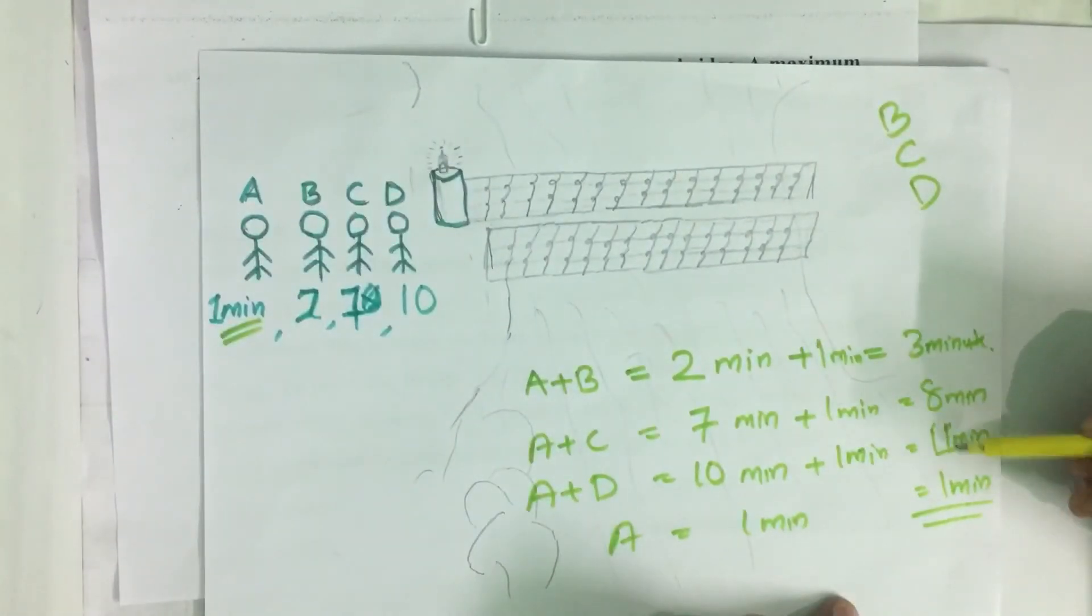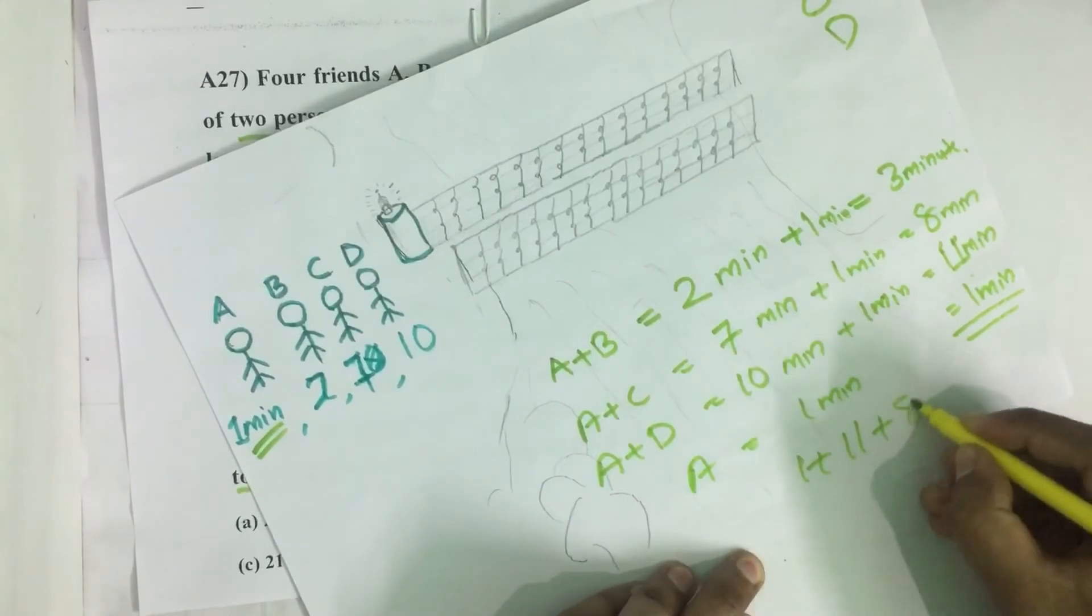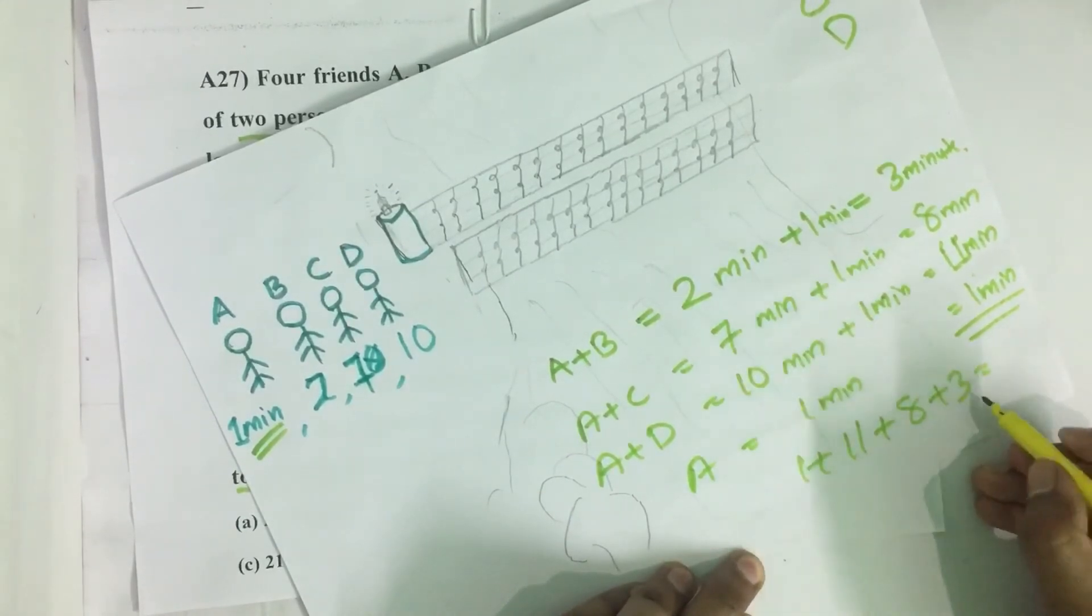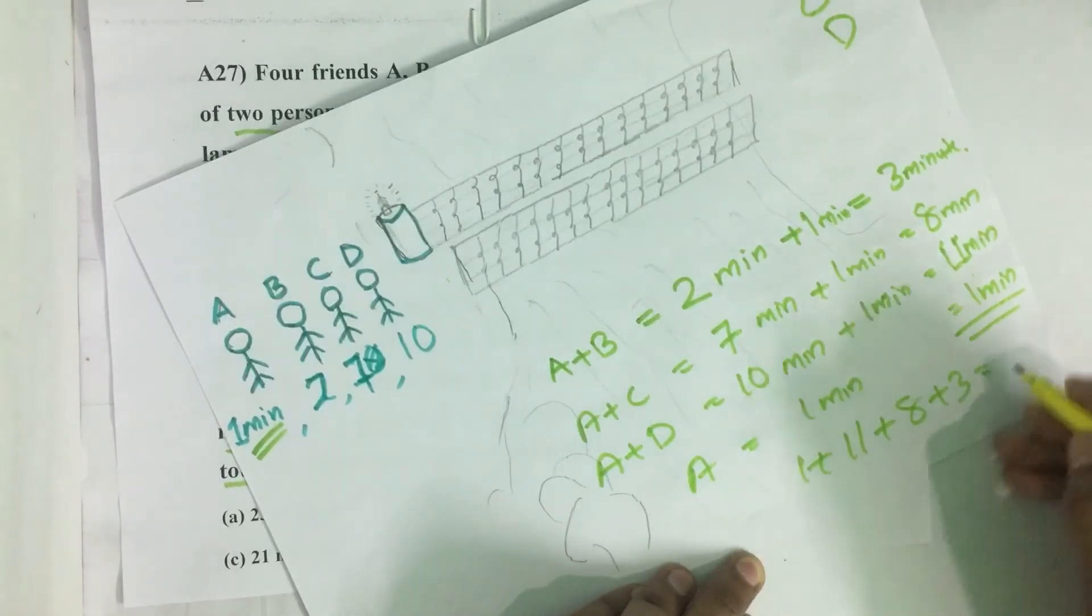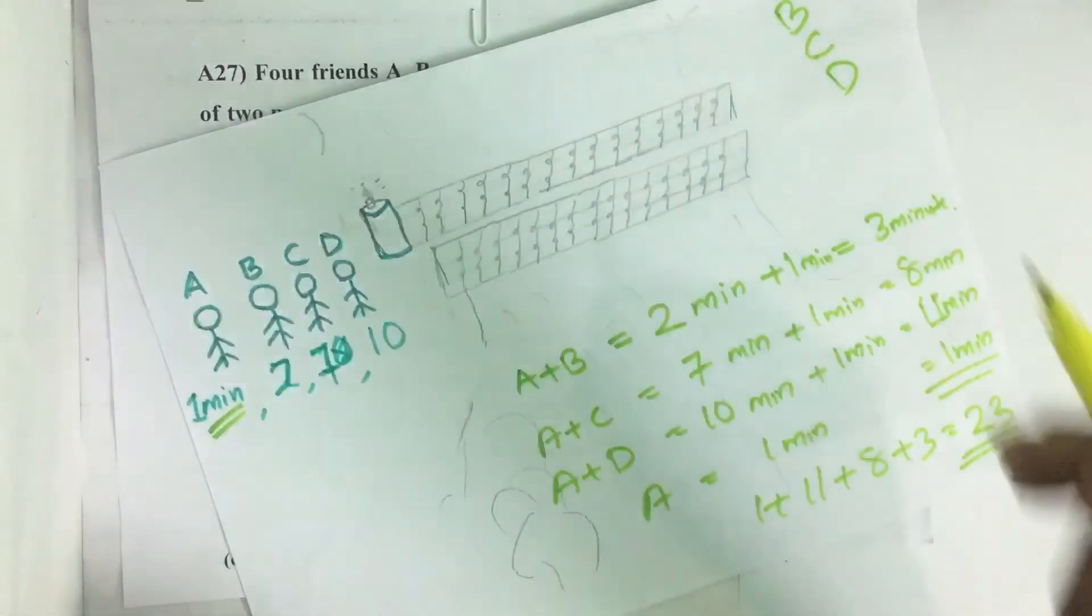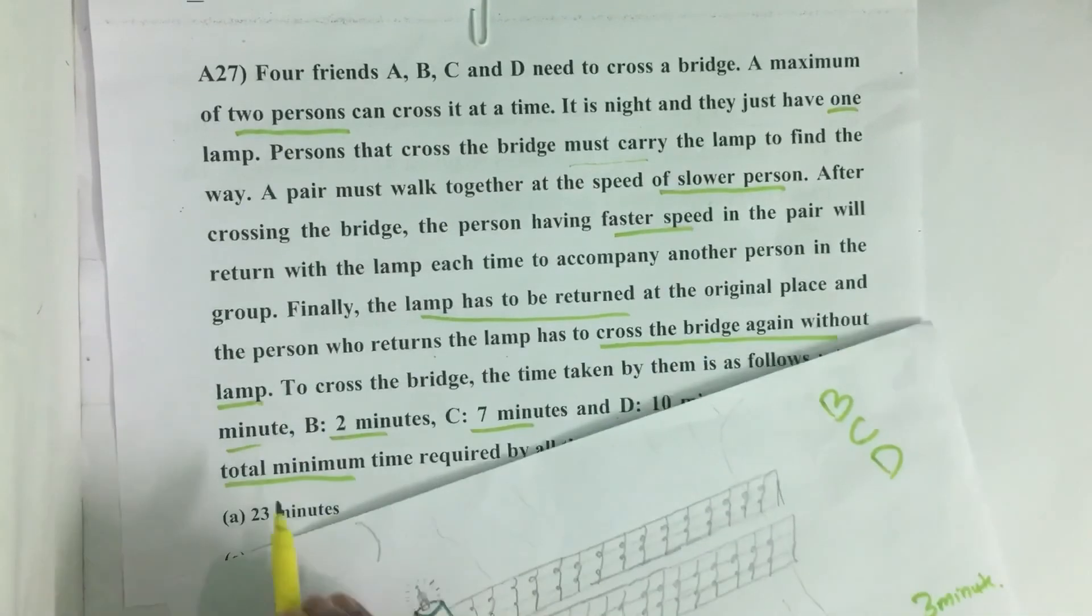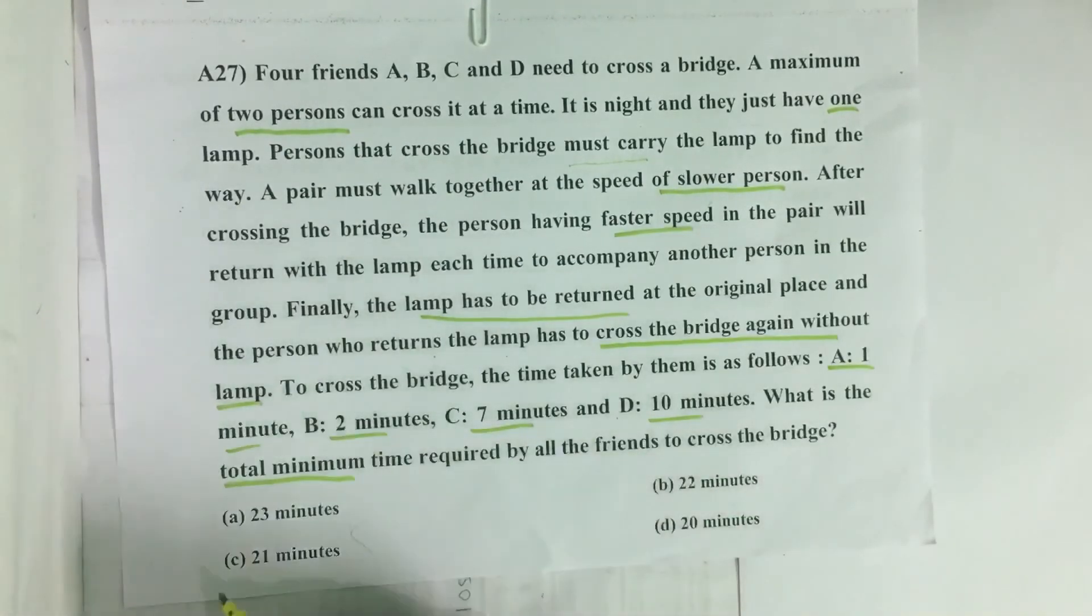Total time equals 1 plus 11 plus 8 plus 3. 1 plus 11 is 12, 12 plus 8 is 20, 20 plus 3 is 23. 23 minutes. In 23 minutes all friends can reach here. They asked for total minimum time, so minimum time is 23 minutes. Our answer is option A, 23 minutes.